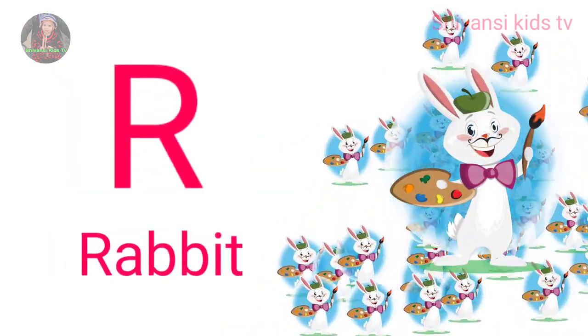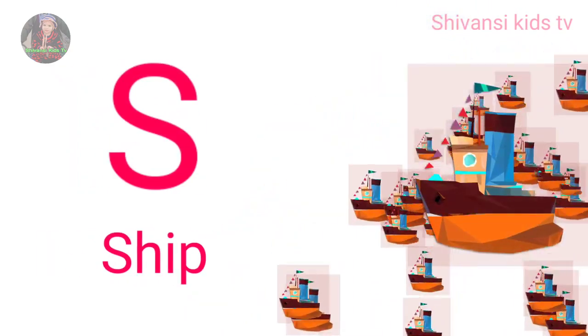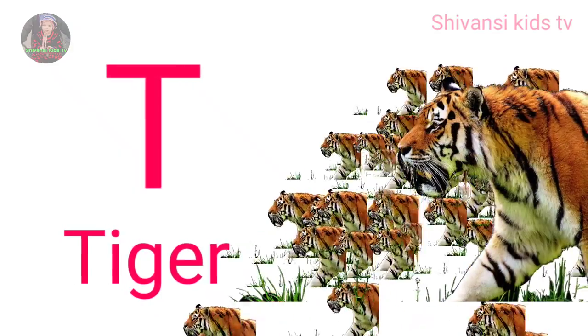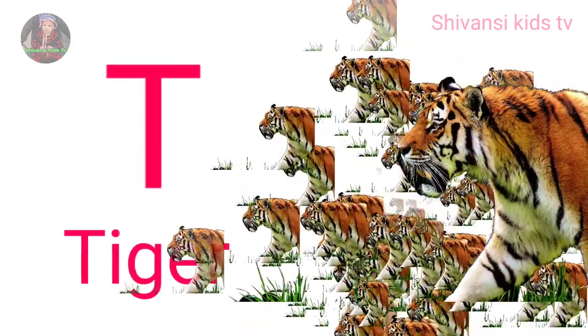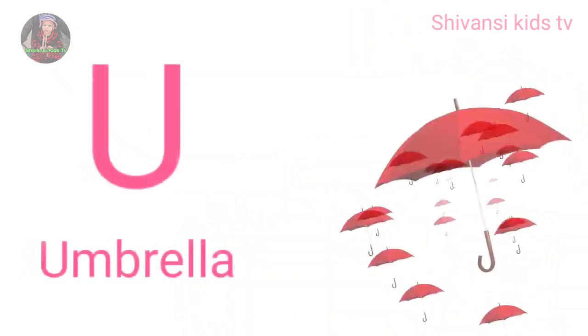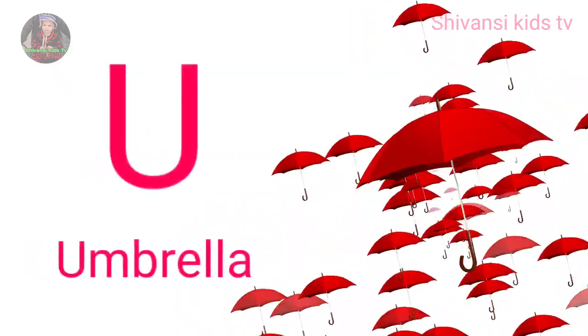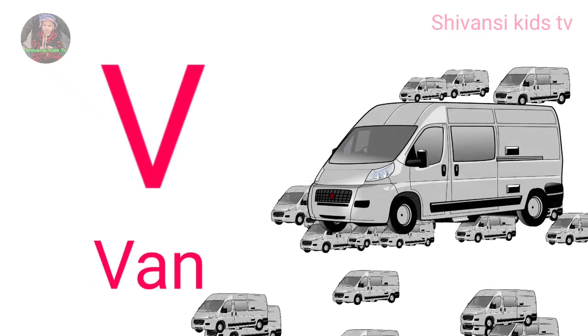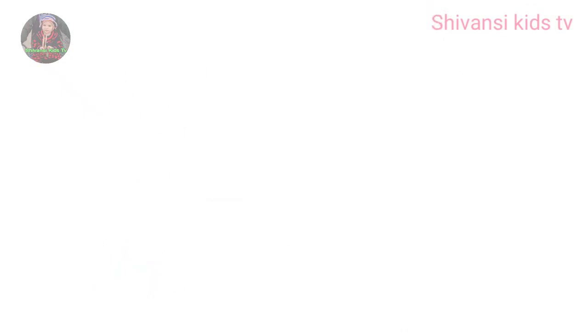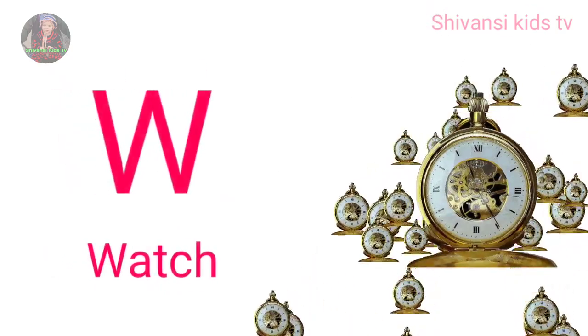R for rabbit, S for sheep, T for tiger, U for umbrella, V for van, W for watch.